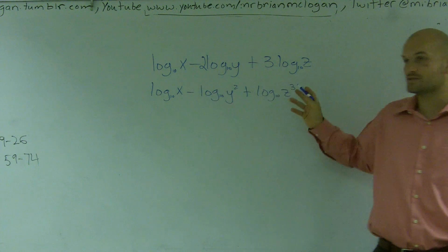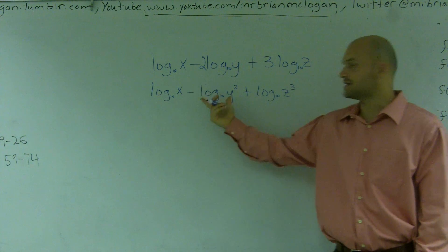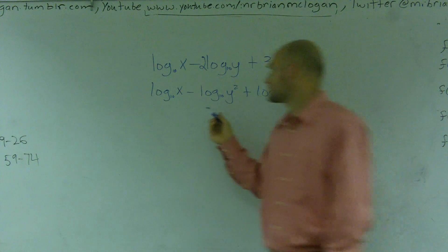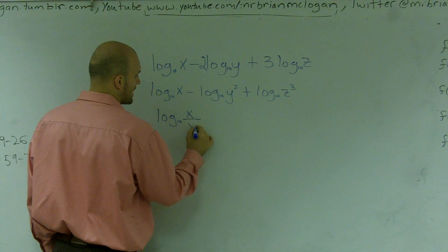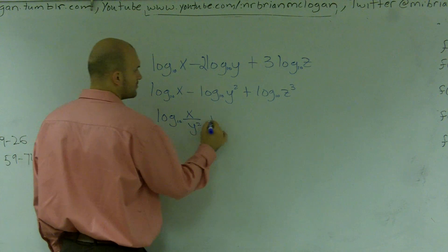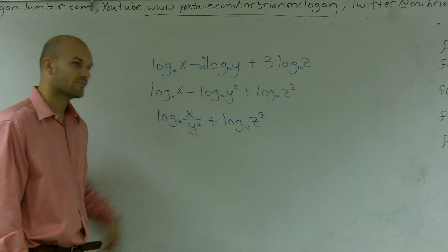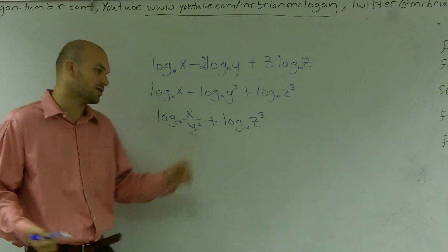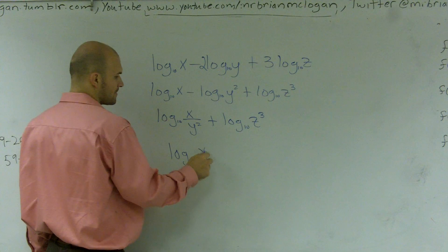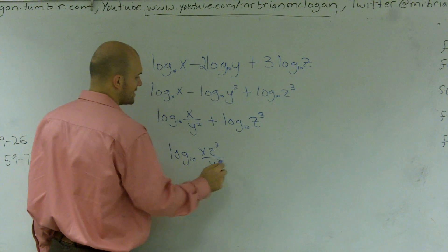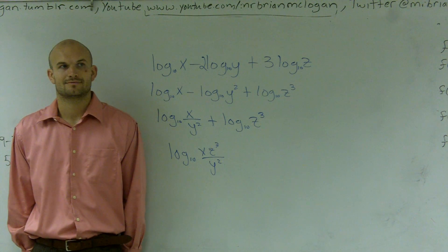Going from left to right — remember, I can rewrite a subtraction problem as a division problem. Since these all have the same bases, we can do this. So since there's division, I can rewrite this as log base 10 of x divided by y squared, plus log base 10 of z cubed. Now I can rewrite the addition problem as a multiplication, so this becomes log base 10 of x times z cubed over y squared.